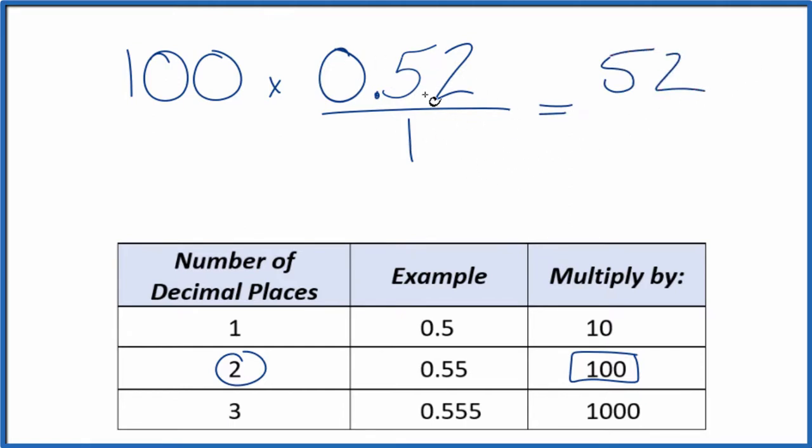But we can't just multiply the numerator by 100. We also have to multiply the denominator. 100 divided by 100, that's just 1. So we're only multiplying by 1. Again, we're not changing the value, just the way it's represented.